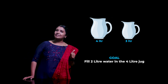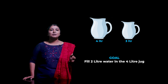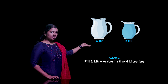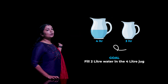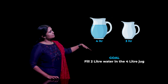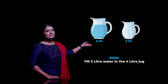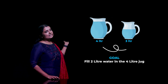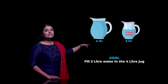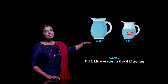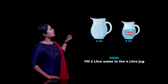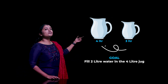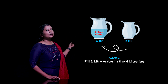Me being an intelligent homo sapien, I come up with a solution like this. First, fill the 3-liter jug, then pour that into the 4-liter jug. Next, again fill the 3-liter jug fully. Pour that water into the 4-liter jug till it's full. Now we have exactly 2 liters in the 3-liter jug. Empty the 4-liter jug and then we can easily pour out the 2 liters into the 4-liter jug.